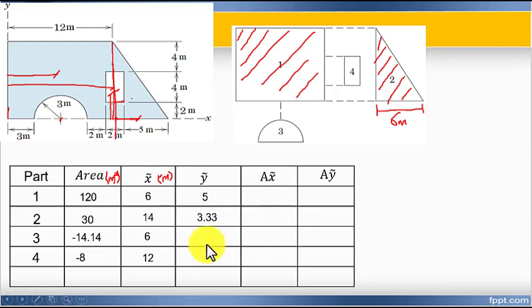Shape three centroid in the y direction. For a semicircle, the centroid is at 4 over 3 times radius divided by pi.